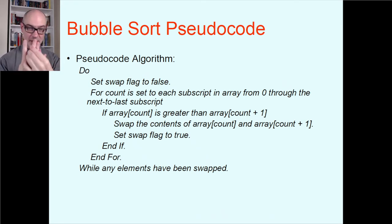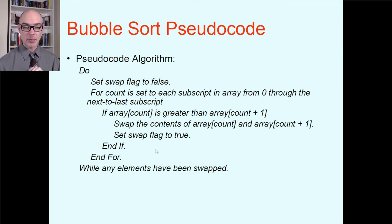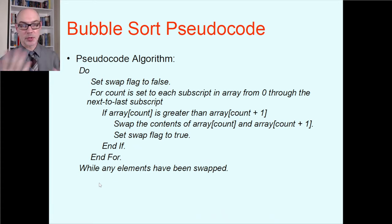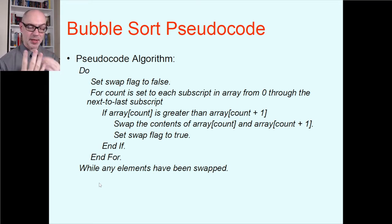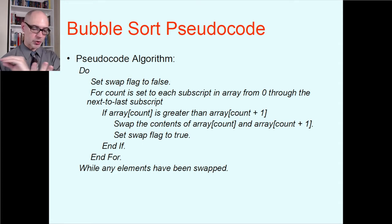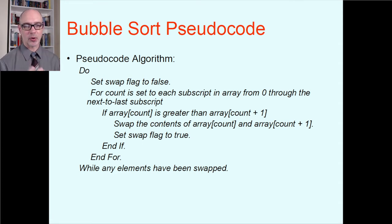Inside that for loop, if this array value is greater than the one right after it, that's the wrong order and you swap them. When you make that swap, set the swap flag to true as a signal that you made a swap on this particular pass. You keep going as long as you've made any swaps on this cycle; if you have, you go back to the do line and do it again. At some point the whole thing will be ordered, the swap flag will remain false, and that's what gets you out of the loop.